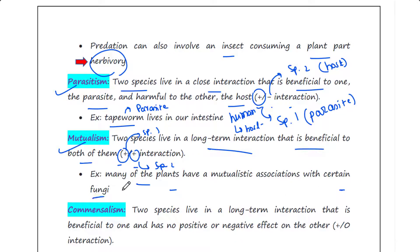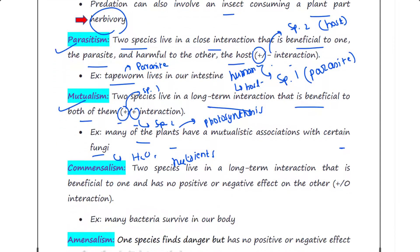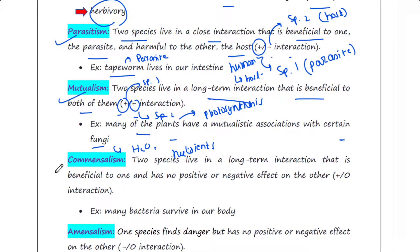For example, many plants have mutualistic associations with certain fungi. The plant can photosynthesize and produce food, which is provided to the fungus. The fungus in turn captures water and nutrients from the soil and provides them to the plant, so both are getting benefited.